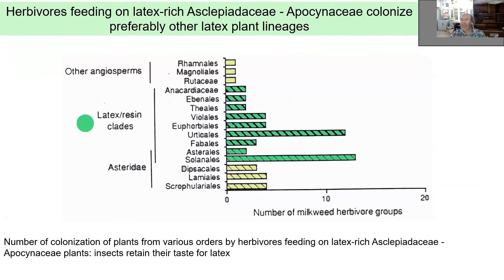There is also some consistency in host shifts. Herbivores originally feeding on Asclepiadaceae and Apocynaceae, which are latex-rich, show instances of long-distance jumps to phylogenetically unrelated plants. Jumps to latex-rich lineages are more frequent than to those without latex. Basically these herbivores are accustomed to latex and tend to colonize unrelated plants that also have latex.